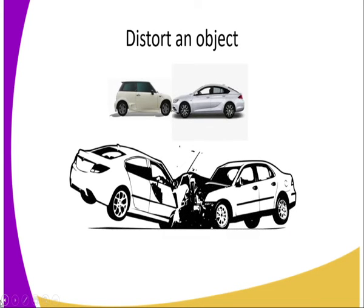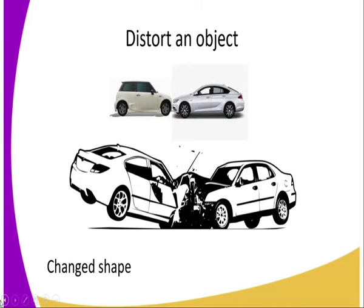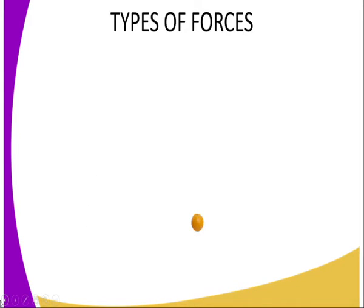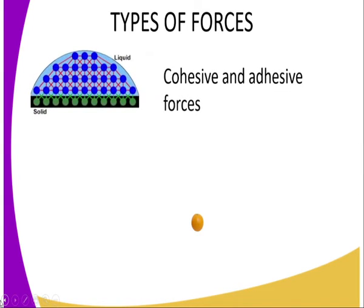Lastly, force can distort the shape of an object. When two bodies collide, after the impact the shape is not the same due to the impulsive force which acts on the two bodies. So force can distort or change the shape of an object.